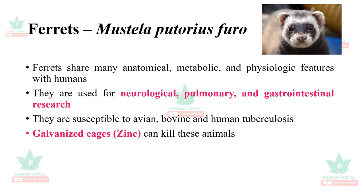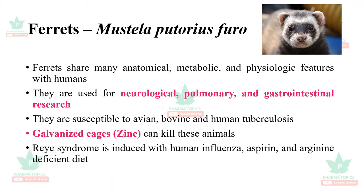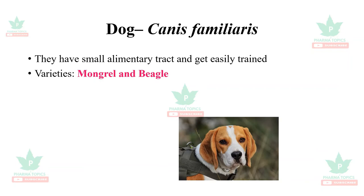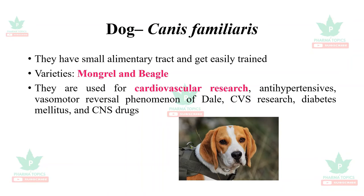Dogs, Canis familiaris, have a small alimentary tract and are easily trained. The common varieties are mongrel and beagle. They are used for cardiovascular research, antihypertensives, and the Dale's vasomotor reversal phenomenon can be demonstrated with dogs. They can also be used for diabetic research and studying drugs acting on the central nervous system.